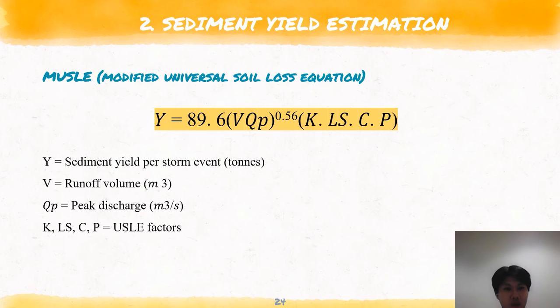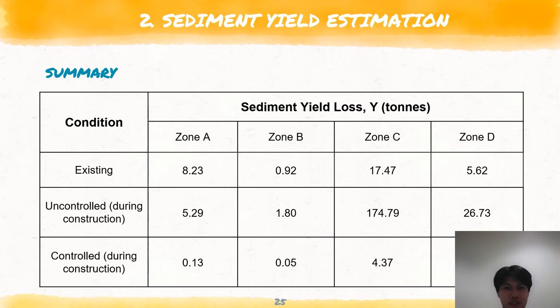Furthermore, sediment yield is the amount of sediment passing a point of interest in a given period of time. Sediment yield is useful to predict the amount of sediment and for maintenance of sediment control BMPs. The sediment yield is calculated using the MUSLE, where Y is the sediment yield per storm event, V is the runoff volume, QP is the peak discharge, while others are the USLE factors. The table shows the sediment yield in tonnes for each condition and zone.